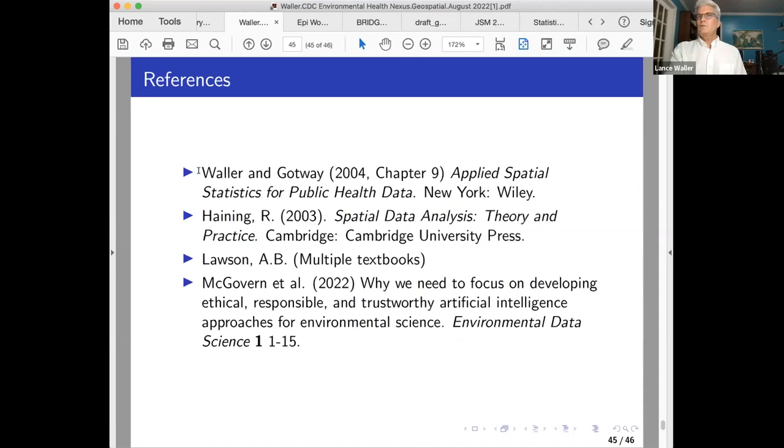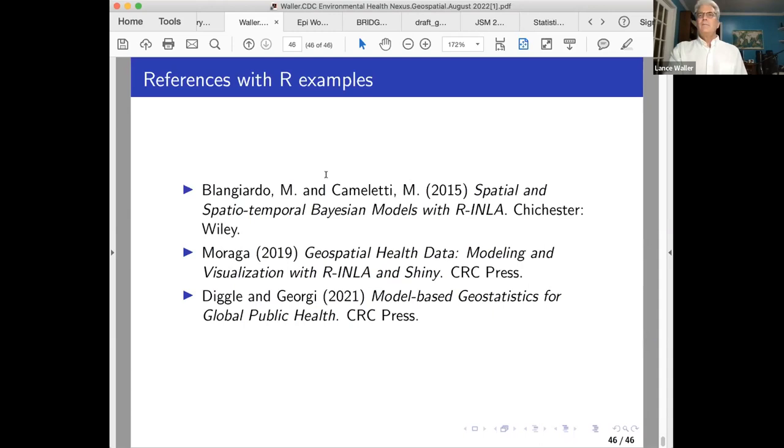The textbook, again, it's almost 20 years old, but we like it. Applied Spatial Statistics for Public Health Data. Bob Haining has an older spatial regression book. Andrew Lawson has a lot of great textbooks. That McGovern paper, I highly recommend this just as a bunch of great examples. The Blank Giardo and Cuminelli is a textbook that has the INLA code for spatial and spatiotemporal. Moraga has fantastic R examples. And then the Diggle and Giordi model based geostatistics also links to their R data. And I believe that's the end of the presentation.